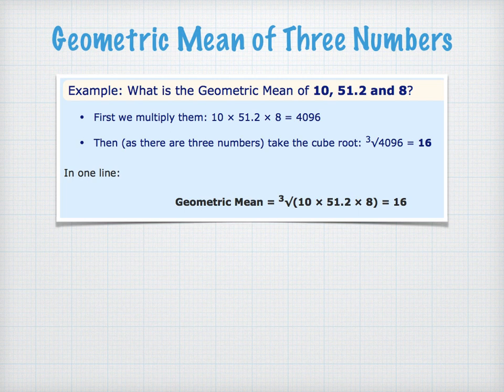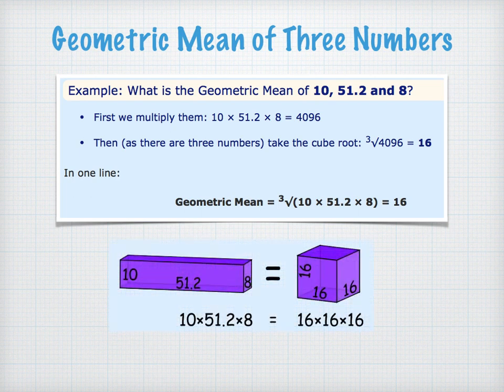If we wanted to make sense of this using a geometric model, we can think about a rectangular prism of dimensions 51.2, 10, and 8. If we found the volume of that prism, it would be the same as the volume of a cube of side length 16. So the geometric mean of 10, 51.2, and 8 is 16.